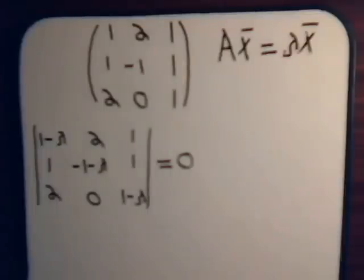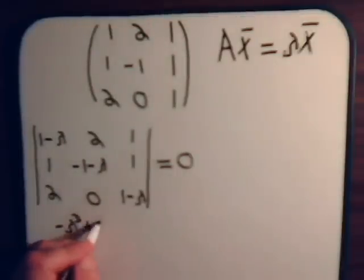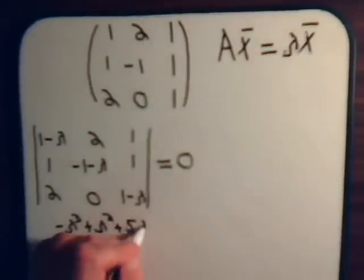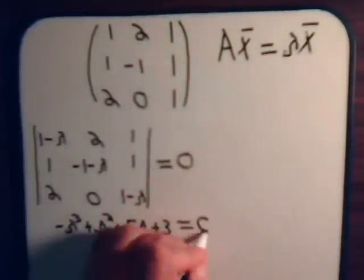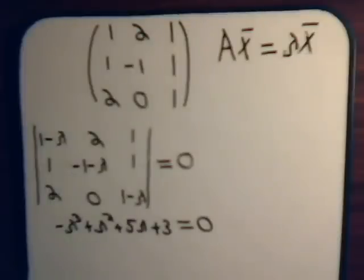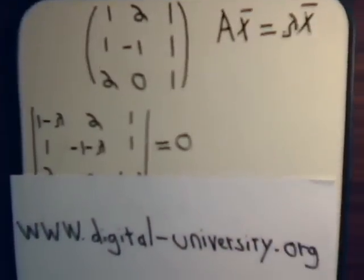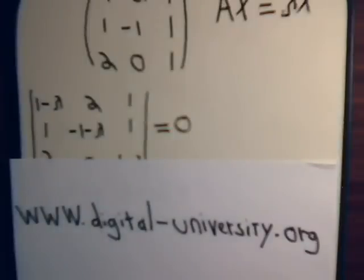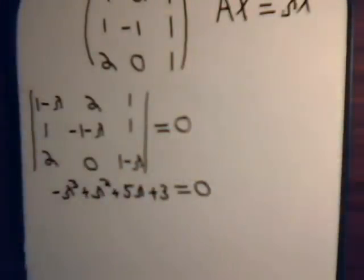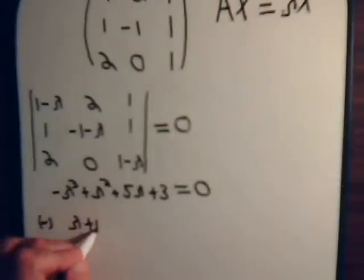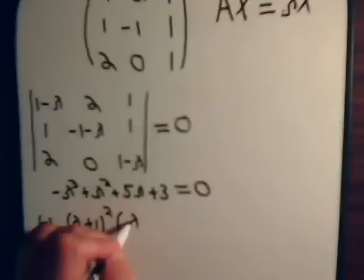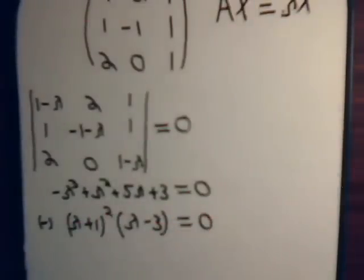If we expand that out with minors, we get the expression: minus lambda cubed plus lambda squared plus 5 lambda plus 3 equals zero. We can find the roots of that by using synthetic division. If you're not familiar with that process, go to the website and click on the calculus playlist and scroll down to the synthetic division section. Using synthetic division, we get minus lambda plus 1 squared times lambda minus 3 equals zero. So we have another repeated eigenvalue problem.